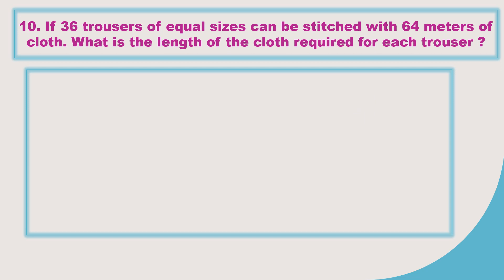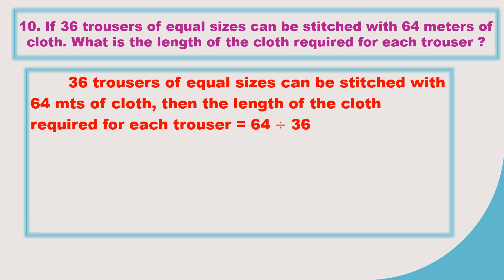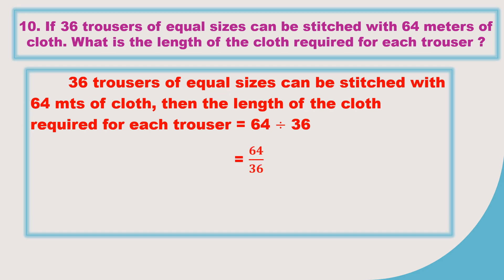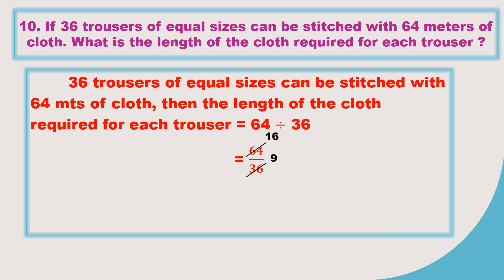So I should divide 64 by 36. The length of cloth required for each trouser is 64 by 36. It is divisible by 4: 4 sixteens are 64 and 4 nines are 36. So it simplifies to 16 by 9. Now divide: 9 once 9, remainder 7. So in mixed fraction it is 1 and 7 by 9. The answer is 1 7/9 meters.